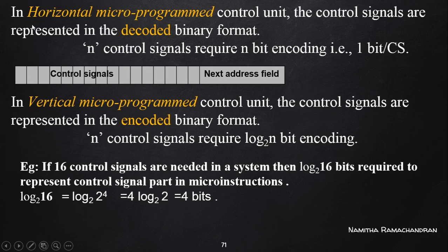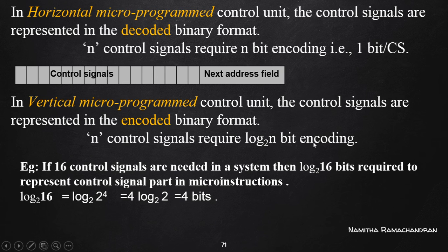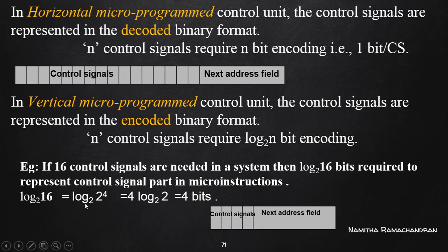For horizontal micro instructions representing 16 control signals, we need 16 different bits — each bit representing a different control signal. But for vertical micro instructions, we need only log₂(n) bits because the control signals are in encoded format. For 16 control signals: log₂(16) = log₂(2⁴) = 4 × log₂(2) = 4 bits. So only 4 bits are required in the control signal field.